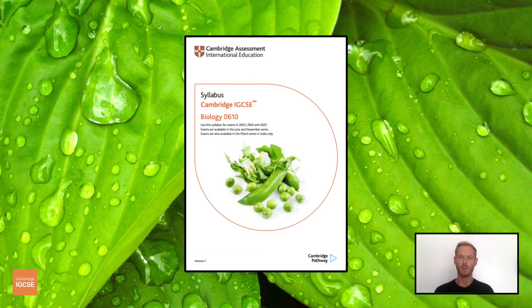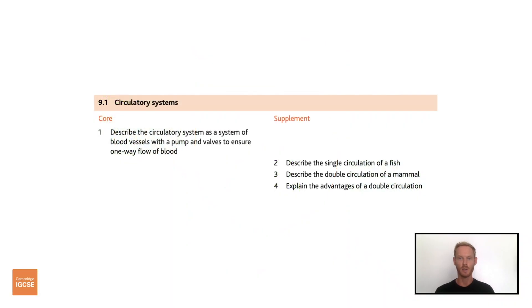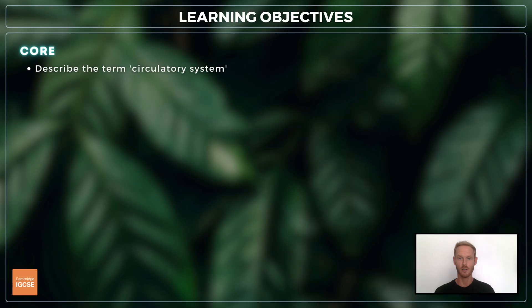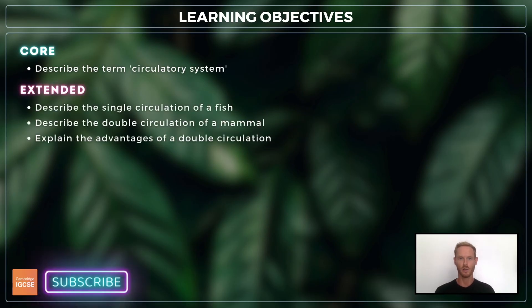As always, we'll be following the Cambridge syllabus exactly, and we'll cover absolutely everything you need to know for your final exam. For topic 9.1, you need to describe the term circulatory system, and for extended, describe the single circulation of a fish and the double circulation of a mammal, and explain the advantages of a double circulation.